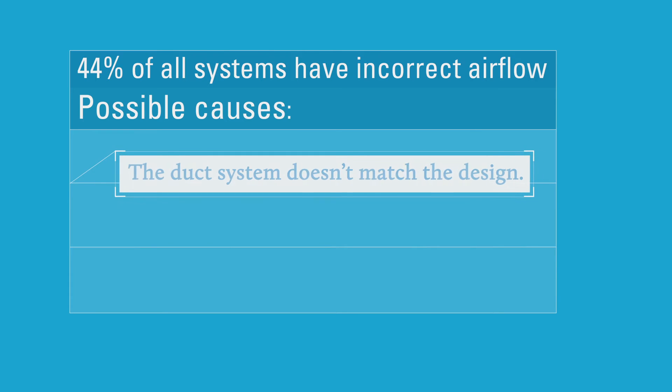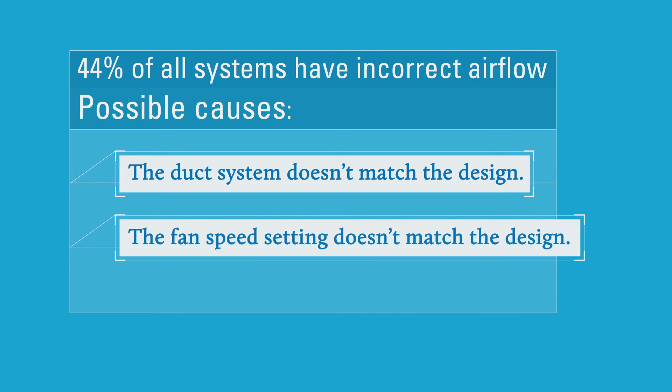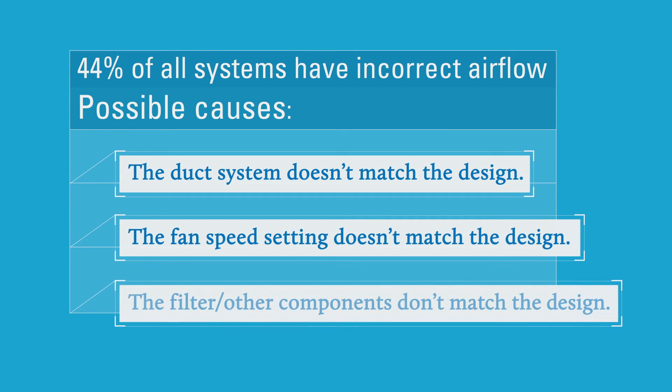So first, the duct system that was installed might not match the duct design. Second, the fan speed setting might be different than the design itself. Third, the filter, the evaporator coil, or other components of the HVAC system might not match the components that were selected at design. Now if all three of these things are correct, then there's a pretty good chance that the airflow will also be correct. If the airflow is off, then it probably means that one of these three things has gone wrong.